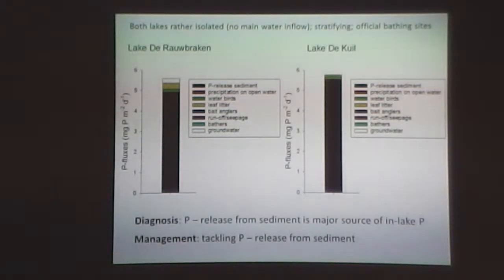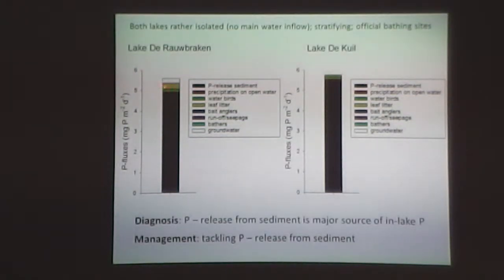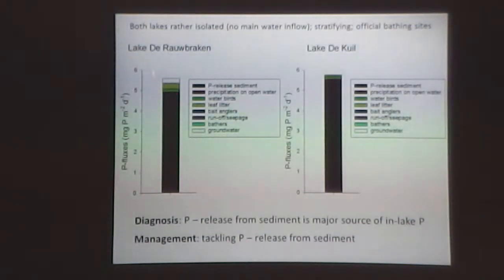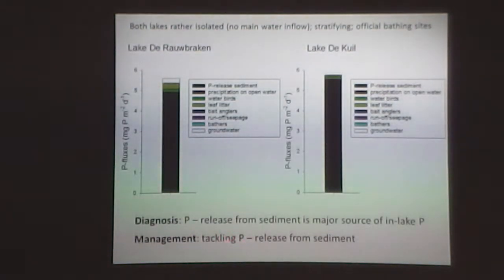Over the years, nutrients have accumulated there. In Lake Haugrack, the major source is leaf litter. Leaves contribute around 2.5 kg phosphorus per year, groundwater around 2.1 kg — and that accumulates over time, giving a huge pool in the sediment. So here we were aiming for tackling the phosphate release from the sediment.